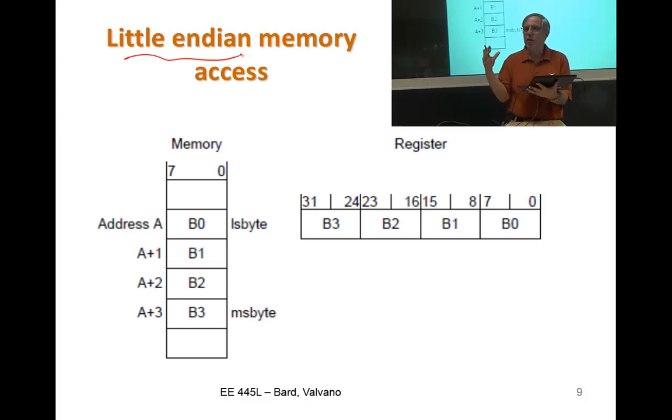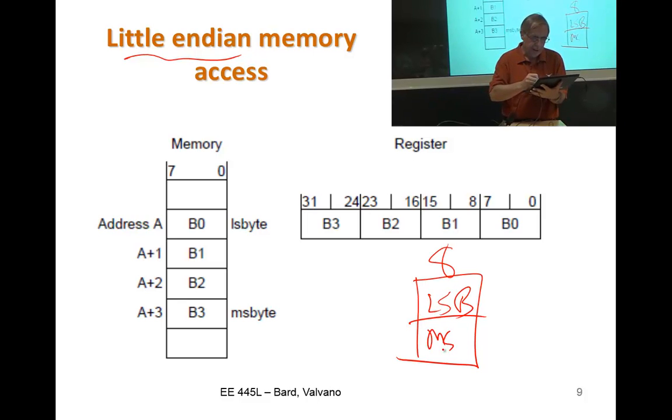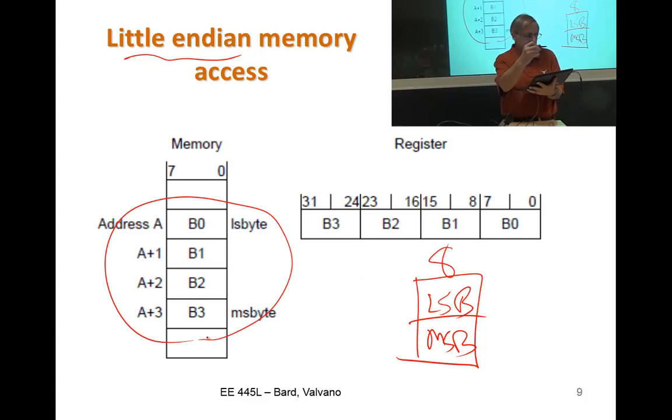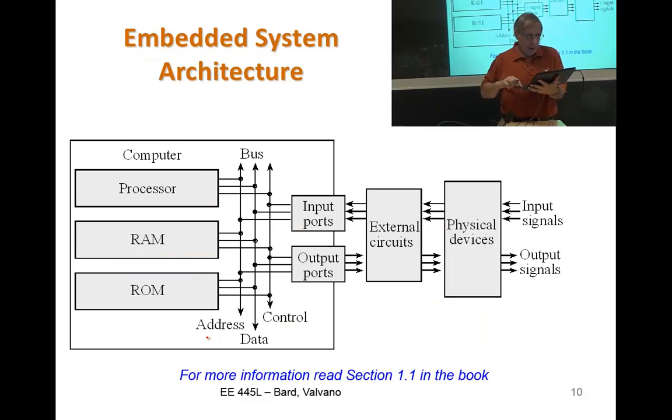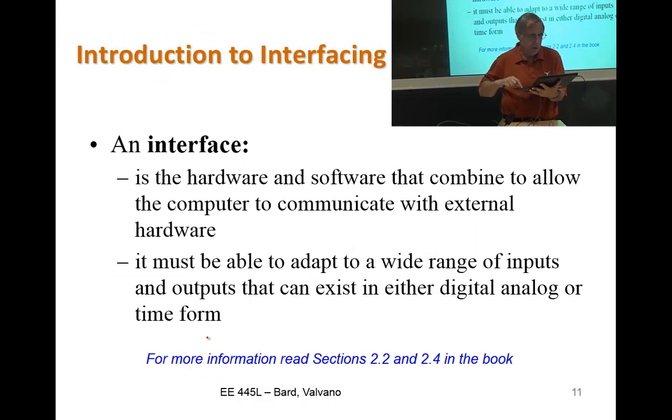It is little endian, which means when you store a 16-bit value into RAM, which is all eight bits wide, the least significant byte goes here, and the most significant byte goes there. But if you're storing a 32-bit number, again, the least significant byte goes first. It's little endian.